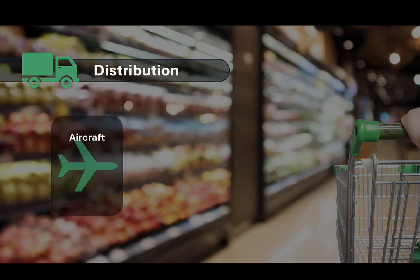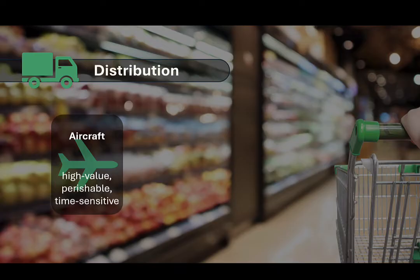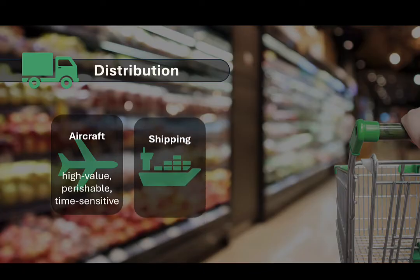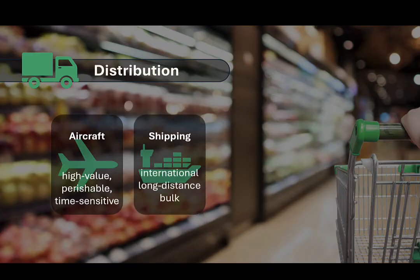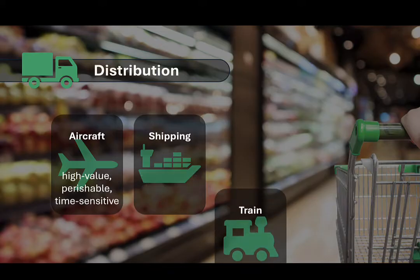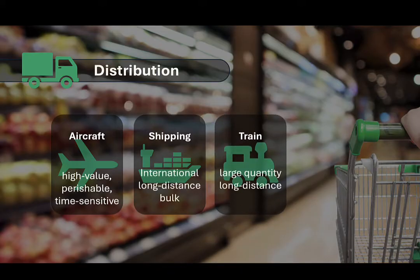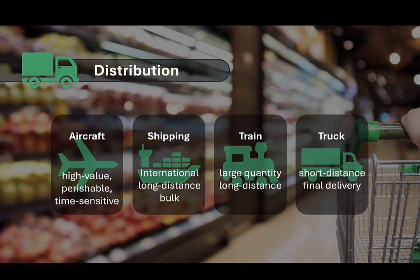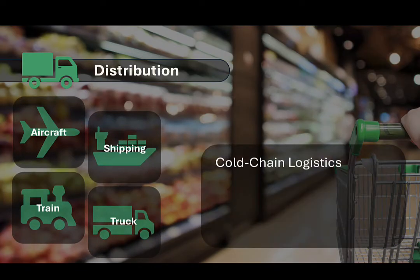For the most part, airplanes are used for the transport of high-value, perishable, and time-sensitive goods requiring rapid delivery — think of fresh fish or cut flowers transported from Africa to Europe or North America. Ships are most often used for international and long-distance transport of bulk and non-perishable items. Trains are commonly used for transporting large quantities of food over long distances within continents, while trucks are normally used for short and medium-distance deliveries to local food retailers. Advances in cold-chain logistics and temperature-controlled supply chains have permitted the development of year-round production and consumption of perishable items like dairy, meat, and fresh produce.